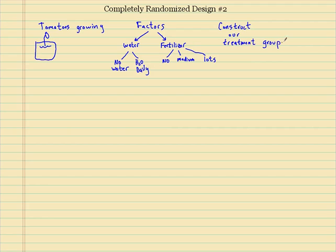So let's just say we have 50 plants. These 50 plants need to be randomized into all treatment groups.